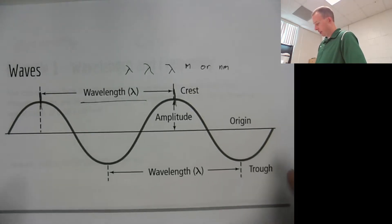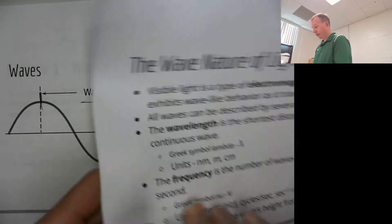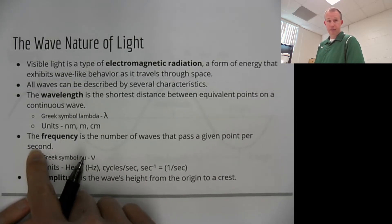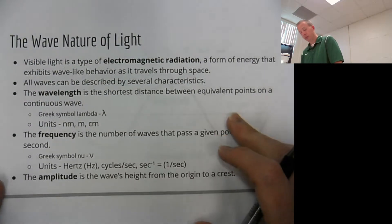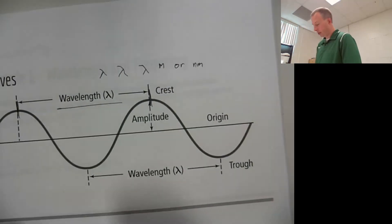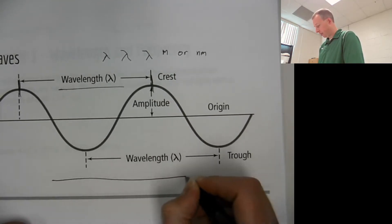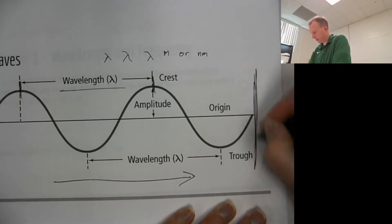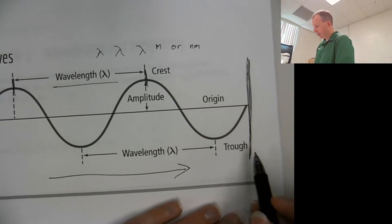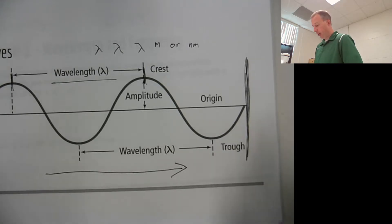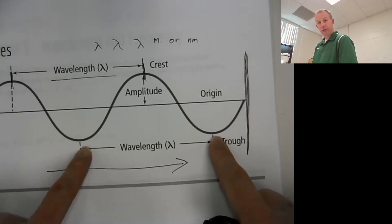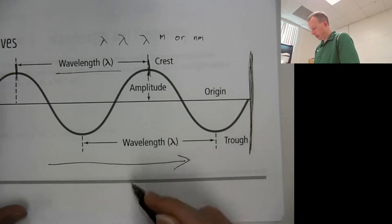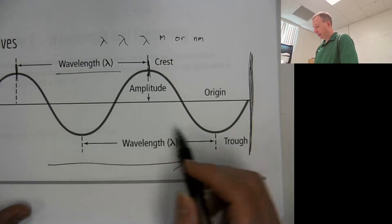The other big thing we're going to care about in a wave is frequency. Frequency is the number of waves that pass a given point in one second. So let's imagine this wave is traveling this way, and we have a point right here. The frequency of a wave is simply measuring how many times a wave — measured by wavelength — is going to pass that point in one second. That's all it is.